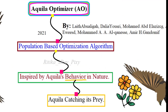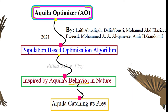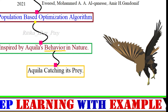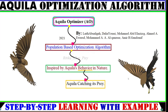Aquila Optimization algorithm is a nature-inspired, population-based metaheuristic optimization algorithm that is inspired by the Aquila's behavior in nature. This algorithm is basically inspired by the different hunting strategies used by Aquila in nature and how they attack on the target. We will discuss different hunting methods used by Aquila and then understand how this algorithm uses those strategies.